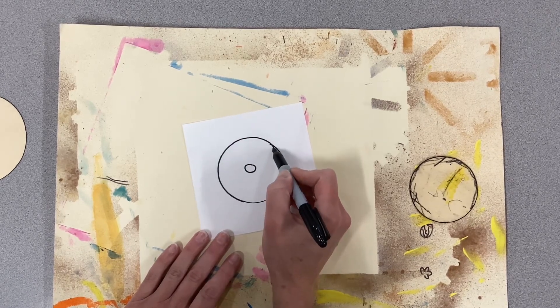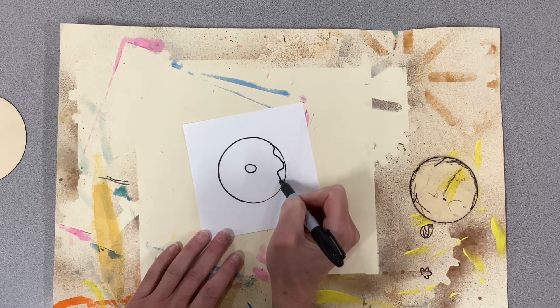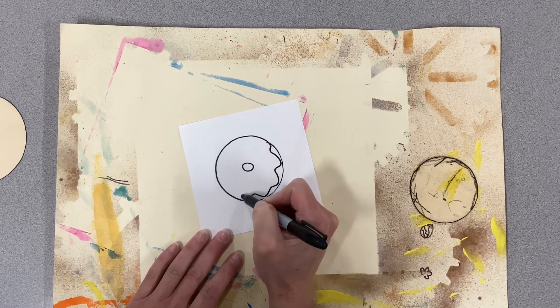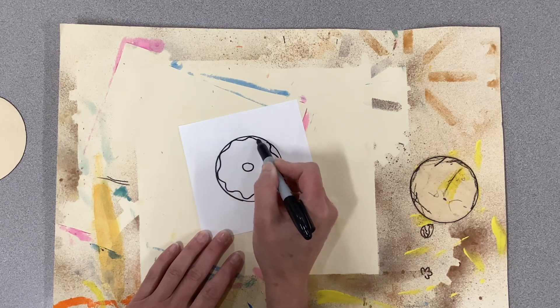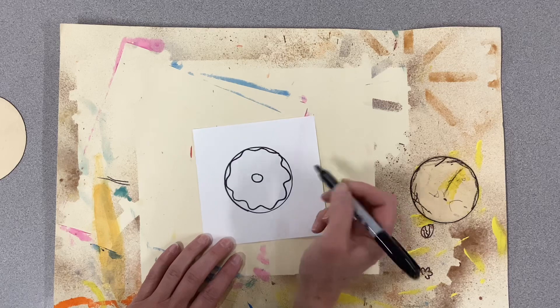And then I'm going to add some frosting drizzles around the edge. Notice how my curves go and touch the edge of the paper, of the circle.